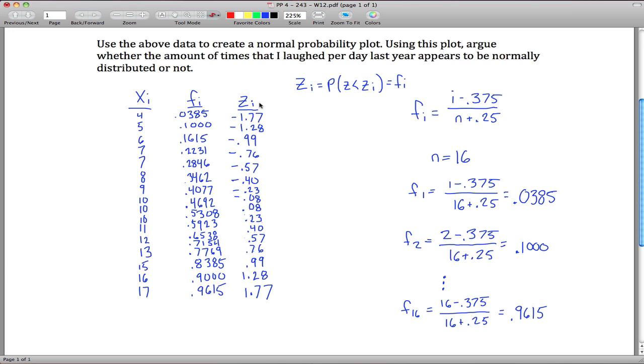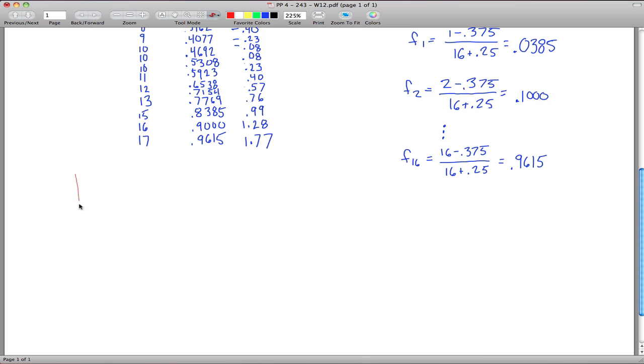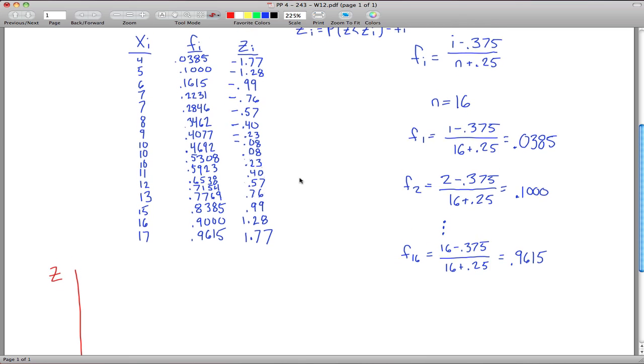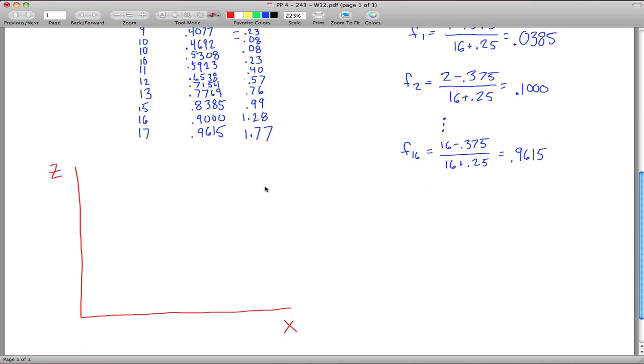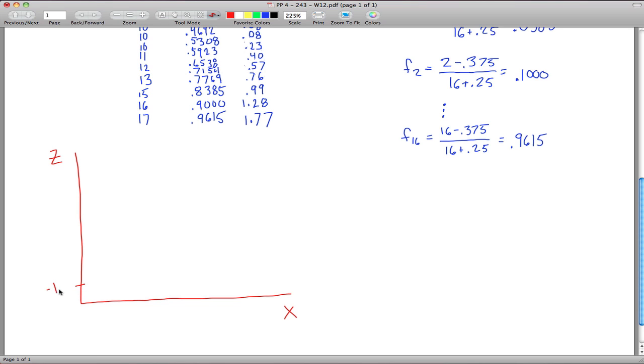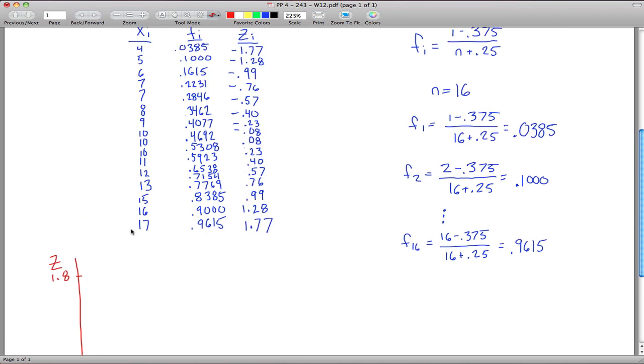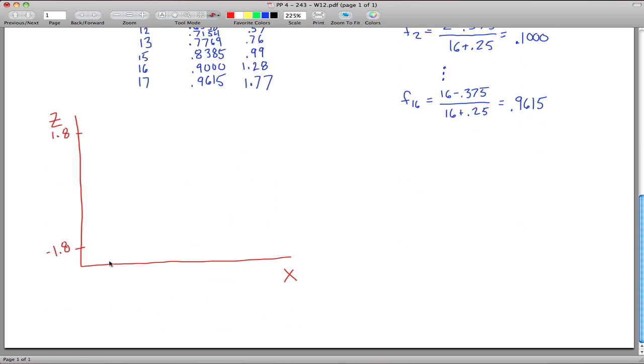And now what I want to do is make a scatterplot, basically, using this as my x variable and this right here as my y variable. So let's see here. These are my x's down here, and this is my y variable, which I'll label as Z. And it looks like my Z's go from negative 1.77 all the way to positive 1.77, so negative 1.8 maybe is right here, and let's say positive 1.8 is right here. And my x values go from 4 up to 17, so okay, or maybe I'll go by 4s, 4, 8, 12, 16, and there's 20.